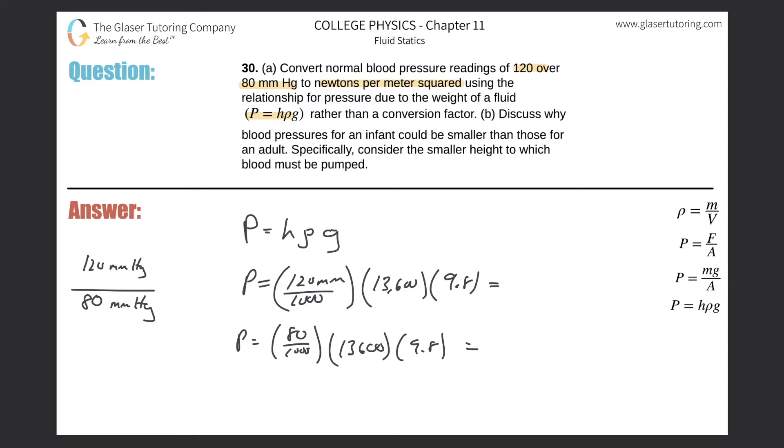So 120 over 1000 times 13,600 times 9.8. And here we get a value. I'm just going to round. 1.60 times 10 to the 4th. This is now in Pascals.